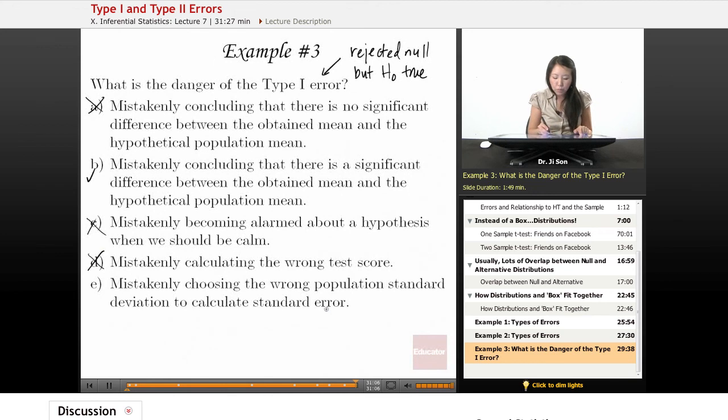Mistakenly choosing the wrong population standard deviation to calculate standard error. That's not it either. These two are just regular old mistakes or errors in calculation. They're not type 1 and 2 errors of hypothesis testing.